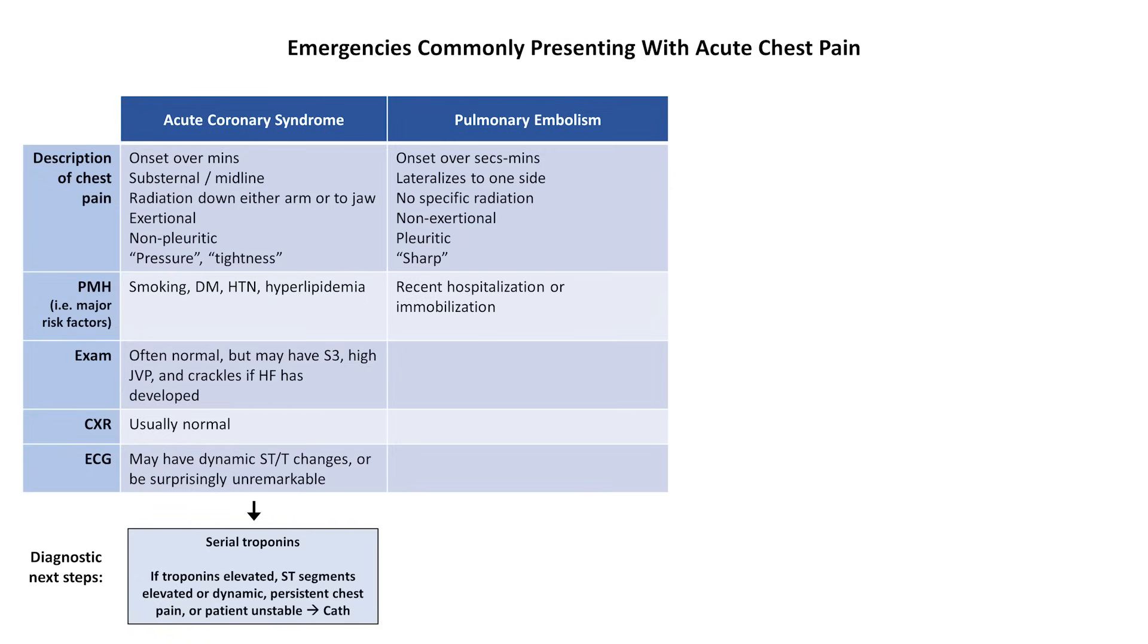The past medical history may reveal a hypercoagulable state, such as recent hospitalization, immobilization, or an active malignancy. Physical exam is usually unremarkable, but patients can have evidence of a DVT in their legs, or very rarely will have a right-sided S3 or right ventricular heave if the PE is unusually severe. Chest x-ray is usually normal. ECG most often shows sinus tachycardia rather than the frequently discussed classic S1Q3T3 pattern.